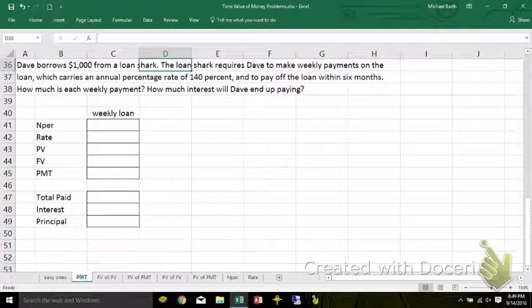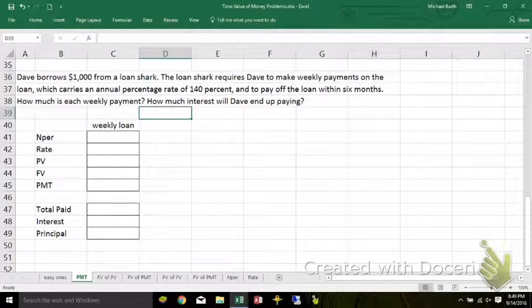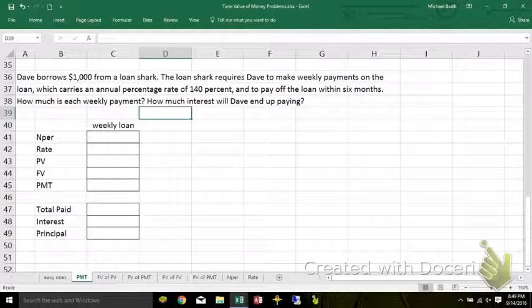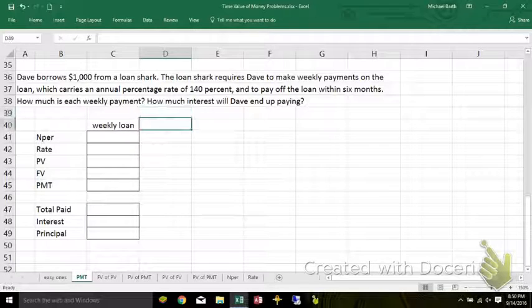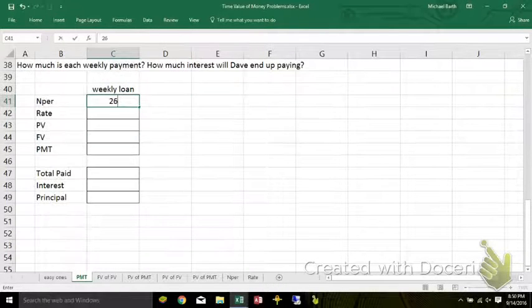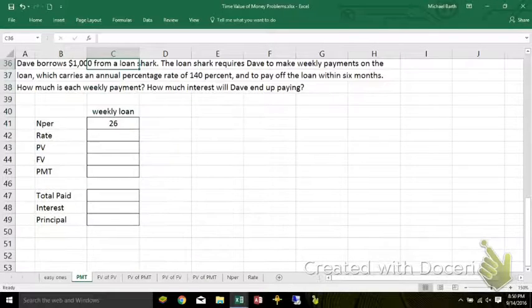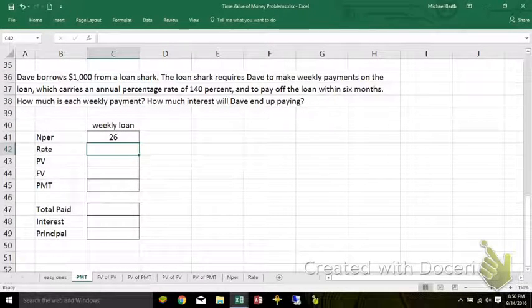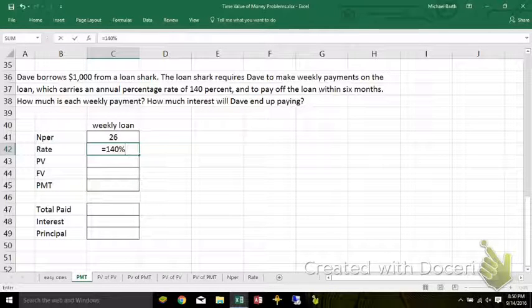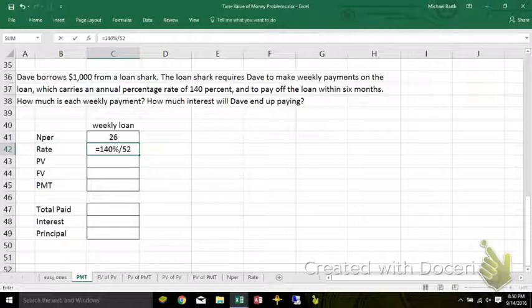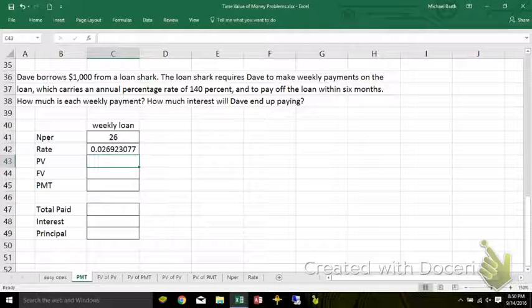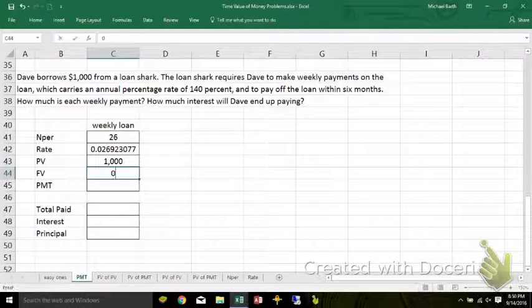All right. Dave borrows $1,000 from a loan shark. The loan shark requires weekly payments, which carry an annual rate of 140%. Got to pay off the loan in six months. How much is each weekly payment? Number of periods. There are 26 weeks in six months or half a year. The interest rate is 140% a year, but we're making weekly payments. So divide by 52 to get the 52 weeks in a year, convert it to a weekly interest rate. The present value is $1,000. You're going to completely pay off the loan.